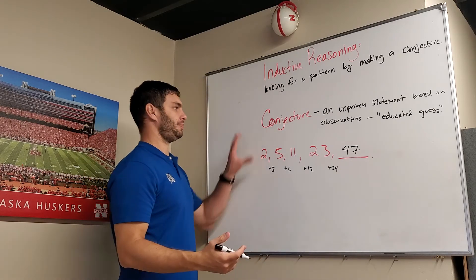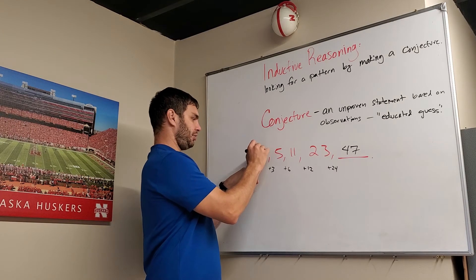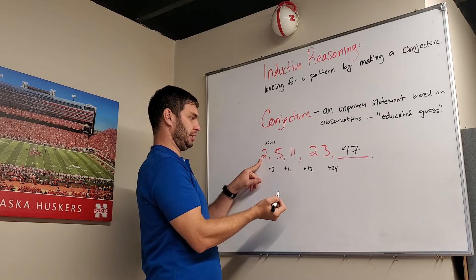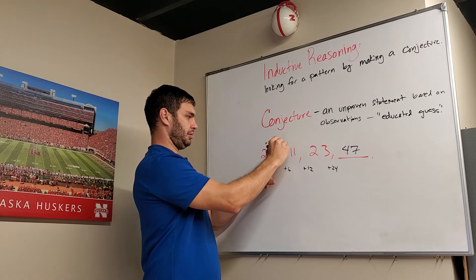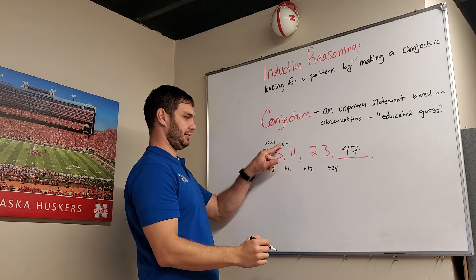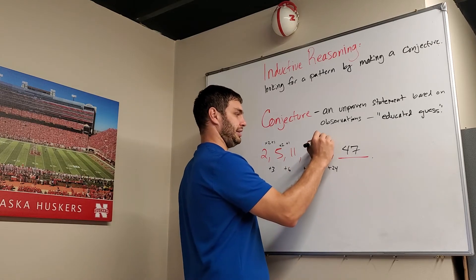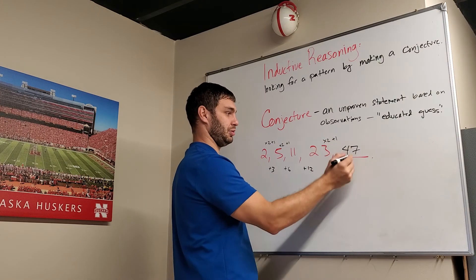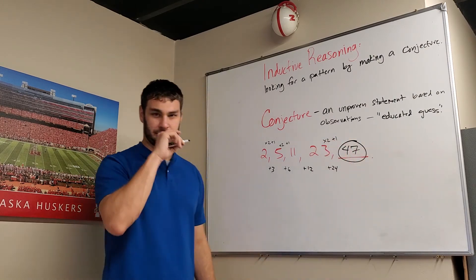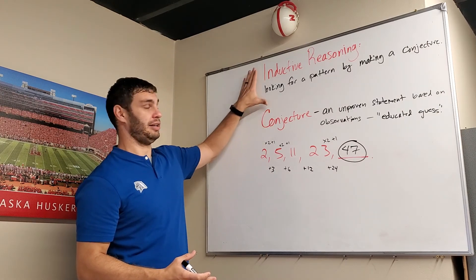There's more than one way to get there — that's partly why this is conjecture. What if I said I doubled this first one and then added 1: 2 times 2 plus 1 gives 5. How about 5 times 2 plus 1? That's 10 plus 1, which is 11. And jumping to the last known term: 23 times 2 is 46, plus 1 is also 47. So you can get there in more than one way using conjecture and inductive reasoning.